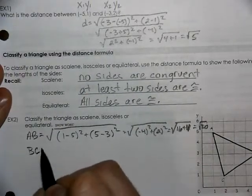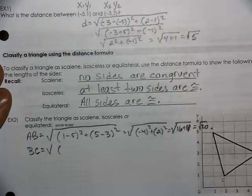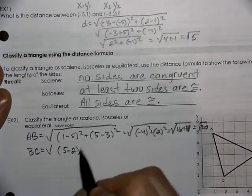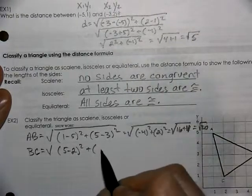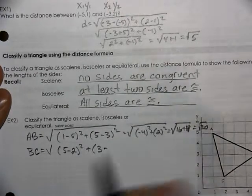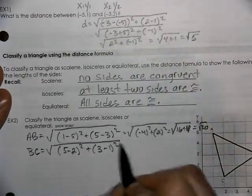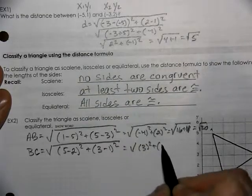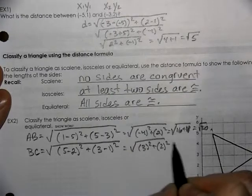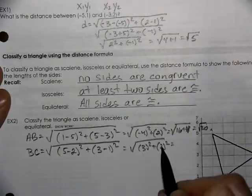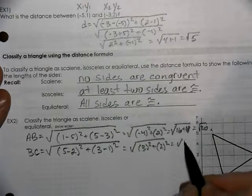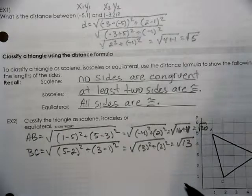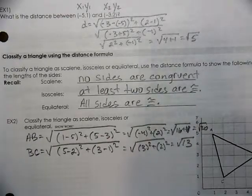BC. Our x values are 5 minus 2, and our y values are 3 minus 1. So we get 3 squared plus 2 squared, which is 9 plus 4, the square root of 13. So that's different than AB, so it's definitely not equilateral.